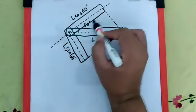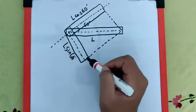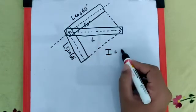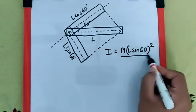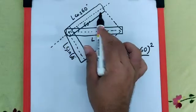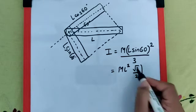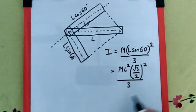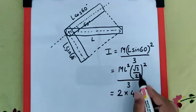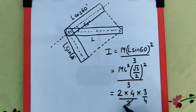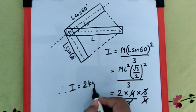For the component along the axis, the moment of inertia is 0. So moment of inertia is applicable only for the perpendicular component, which means the moment of inertia is M (L sin 60)² / 3, because it is passing through its end. With mass = 2, length = 2, sin 60 = √3/2, we get the final moment of inertia as 2 kg·m².